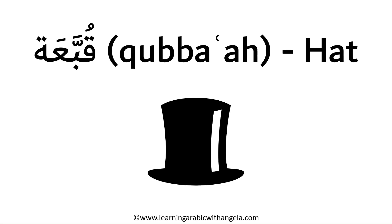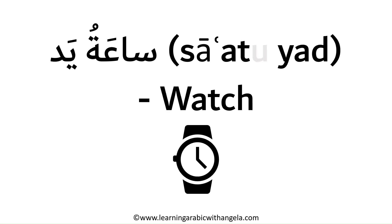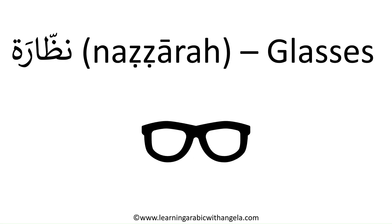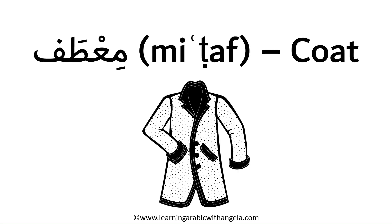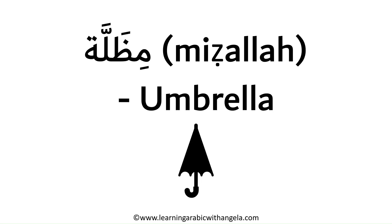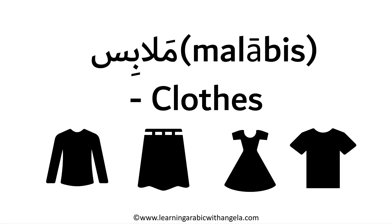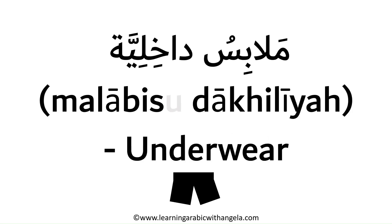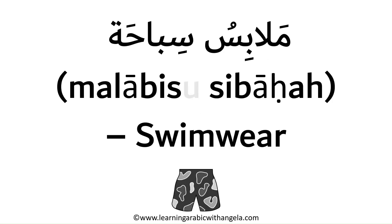Qubba'a — a hat. Sa'atu yad — a watch. The word sa'a means a watch or clock, and yad means a hand — so literally 'hand's clock.' Nazara — glasses. The word nazara in Arabic is singular. Ma'ataf — a coat. Mithalla — an umbrella. Malabis — clothes. Malabisu dakhiliya — underwear. Malabisu sibaha — swimwear, literally 'clothes for swimming.'